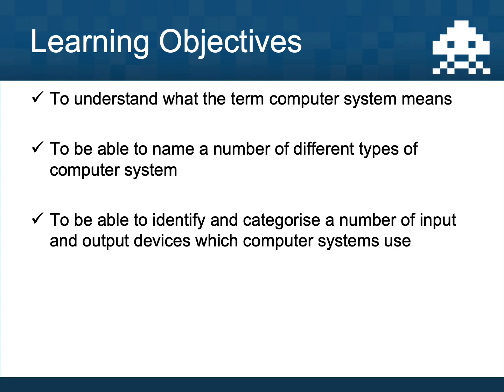That's the end of this first video in our computer systems unit of work. Hopefully you now understand what a computer system means, can name a number of different examples of computer systems, and are able to identify and categorize input and output devices. If you're not sure on any of those, go back through the video and have another look, or drop a comment below or contact your teacher via Google Classroom. Thank you very much for watching.